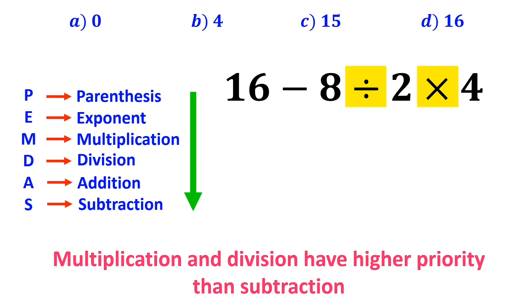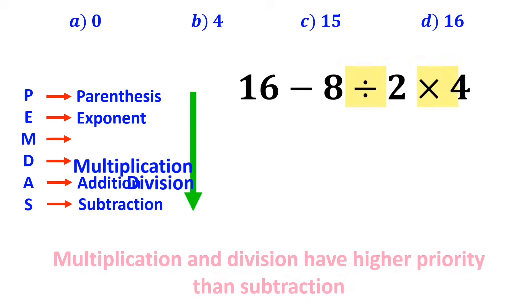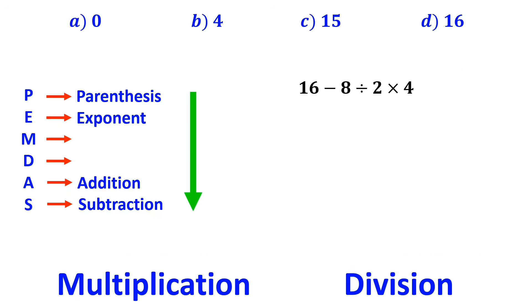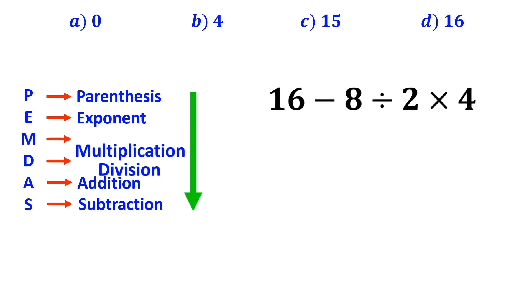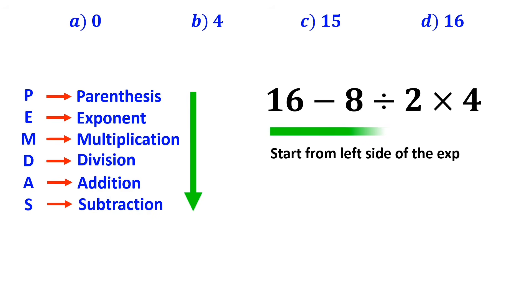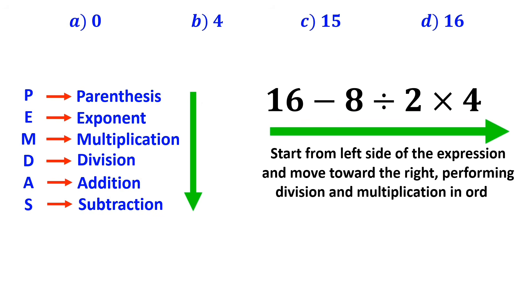However, it's very important to note that in the PEMDAS rule, multiplication and division have exactly the same level of priority. In this situation, the best thing to do is to start from the left side of the expression and move toward the right, performing division and multiplication in order.